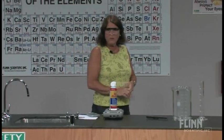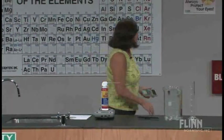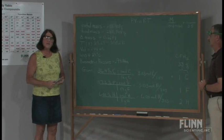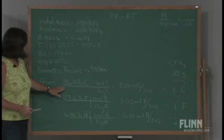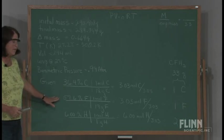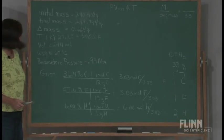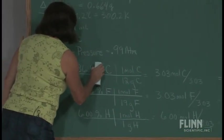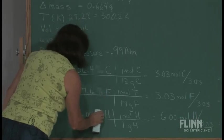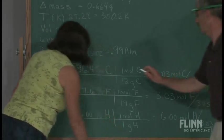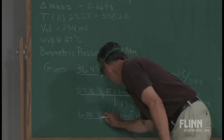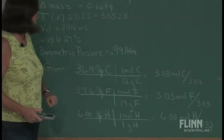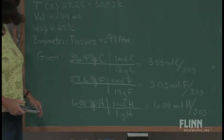I'm going to move over to the board for a second. We're being told that the composition of this gas is 36.4% carbon, 57.6% fluorine, and 6% hydrogen. We can take these and turn these into grams. I'm assuming that if I had a 100-gram sample, those percentages could be converted into grams. So 36.4 grams of carbon, 57.6 grams of fluorine, and 6 grams of hydrogen.